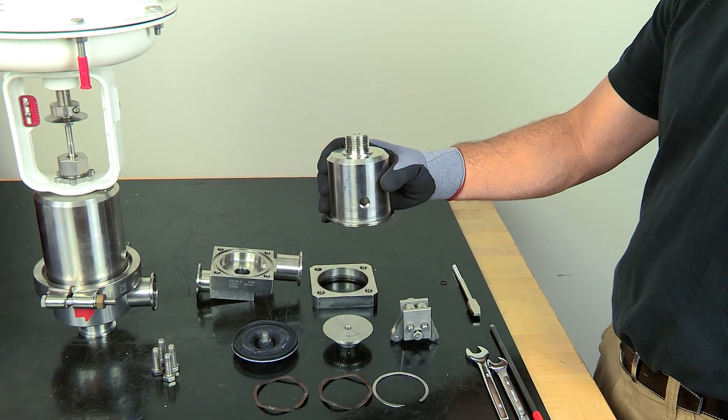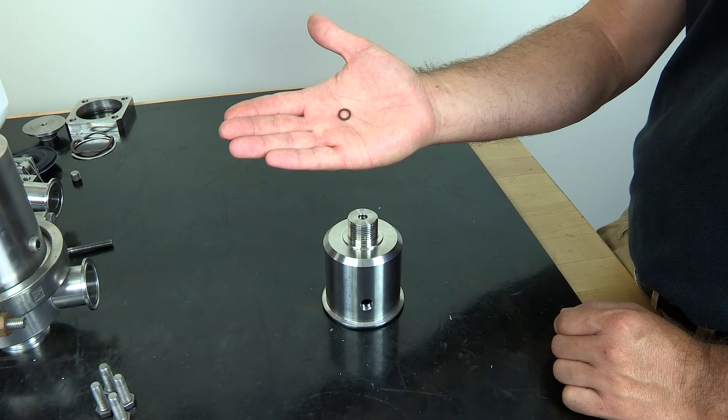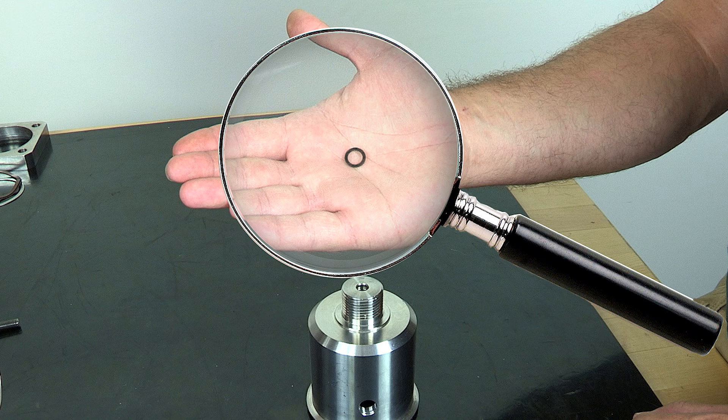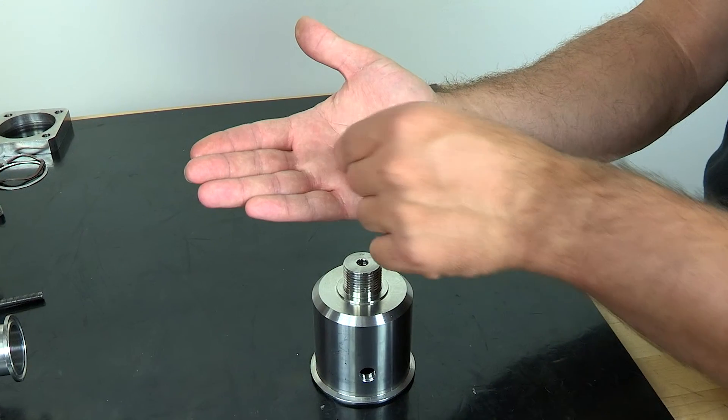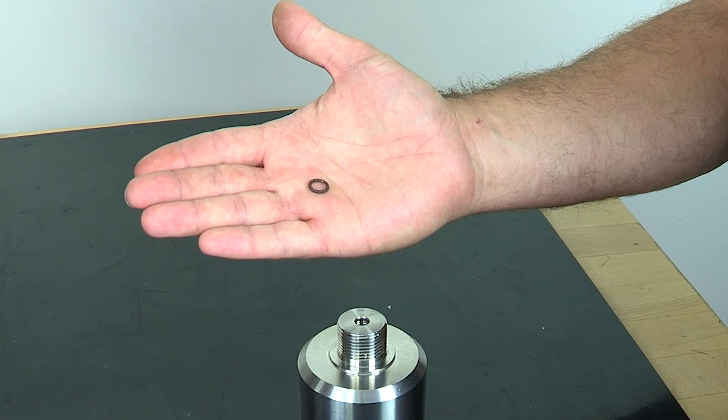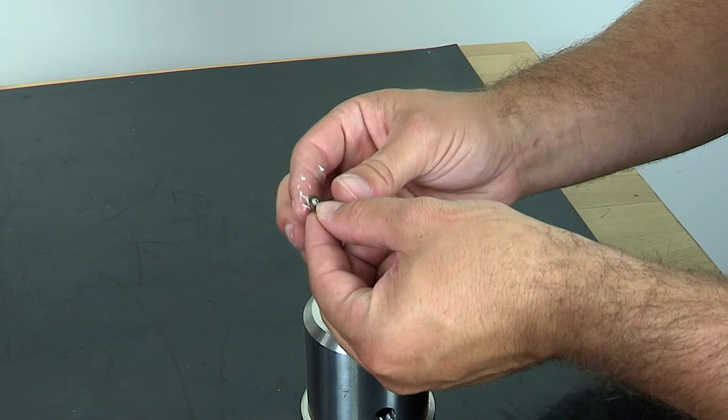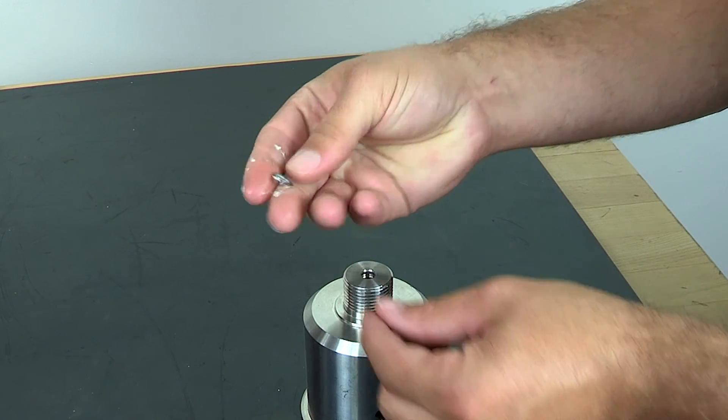First, we'll start with the bonnet assembly. An O-ring is used to seal around the piston stem at the top of the bonnet. Make sure that there are no tears or breaks in the O-ring before installing it and lubricate the O-ring with a sanitary grade grease.